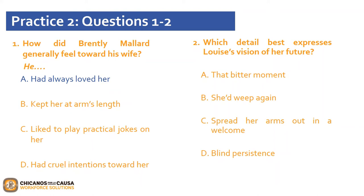Moving forward to question 2: which detail best expresses Louise's vision of her future? A, that bitter moment; B, she'd weep again; C, spread her arms out in a welcome; or D, blind persistence? If you chose option C, spread her arms out in a welcome, you are correct. The first paragraph explains that although Louise knew she would cry at the sight of her dead husband, that bitter moment would soon give way to years of freedom, which she welcomed. You may now pause the video and complete questions 3 and 4. Click play when you are ready to continue.